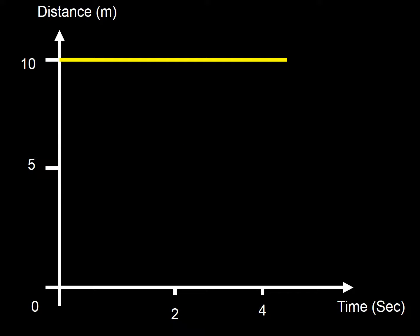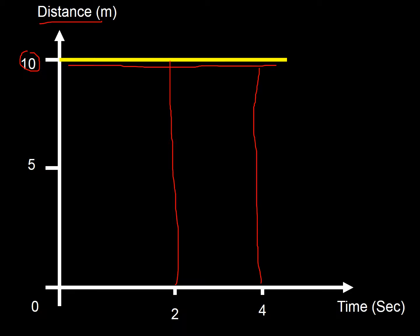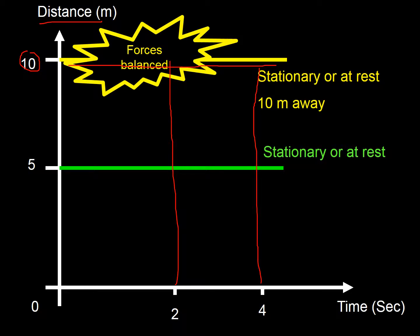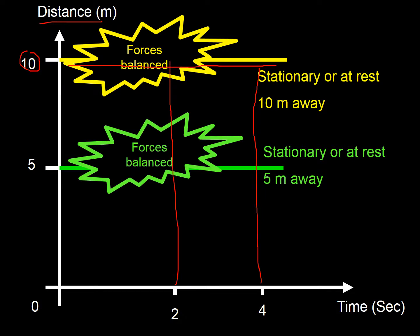On this first graph we're looking at just a straight horizontal line. Because this is a distance-time graph, it shows the object is at a constant distance — 10 meters away, never changing. After two seconds: 10 meters. After four seconds: 10 meters. That means it's not moving — it's stationary, or at rest. The forces must be balanced.